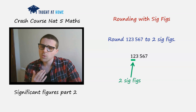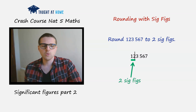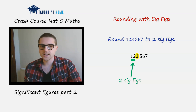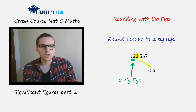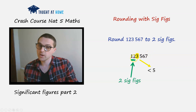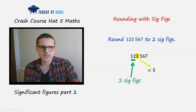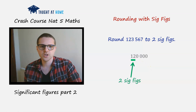What we're going to do is look at the third significant figure, which is the three, and apply our rounding rule: is it less than five or is it five or higher? We can see that three is less than five, so just like when we're rounding decimal places, we're going to leave the two the same and drop the remaining numbers, converting them to zeros. So 123,567 rounded to two significant figures is 120,000.